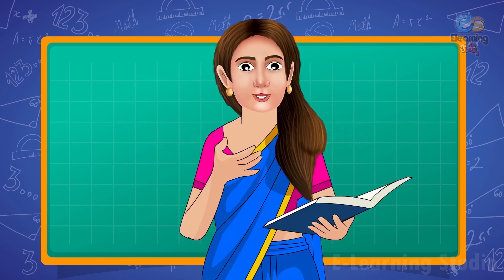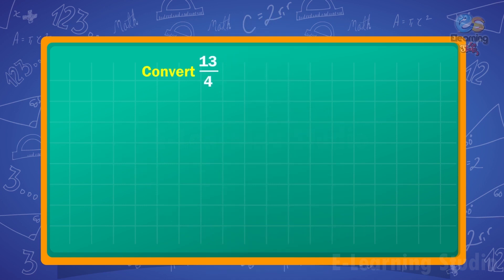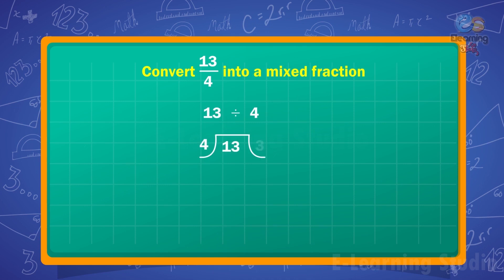In the next example, convert 13 upon 4 into a mixed fraction. Here, divide 13 by 4. So, 4 times 3 is 12 and the remainder is 1. We get 3 as the whole. Children, the whole number is always a mixed number and what is left is 1 upon 4.